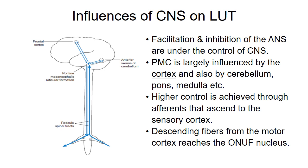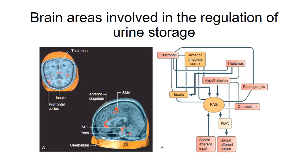Now looking at the influences of the central nervous system on the lower urinary tract: facilitation and inhibition of the autonomic nervous system are under the control of the CNS, which is also under the influence of the cerebellum, pons, medulla, etc. Higher control is achieved through afferents that ascend to the sensory cortex; descending fibers from the motor cortex reach the sacral parasympathetic nucleus. The areas involved in regulation of urine storage include the thalamus, insula, prefrontal cortex, anterior cingulate cortex, periaqueductal gray (PAG), pons/medulla, cerebellum, and the supplementary motor area (SMA).